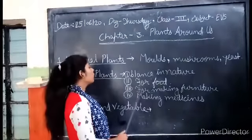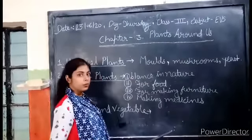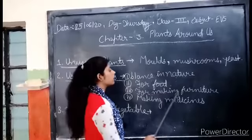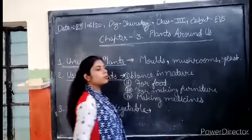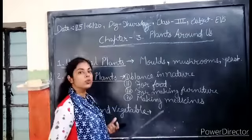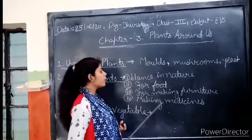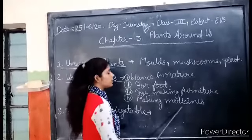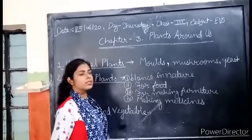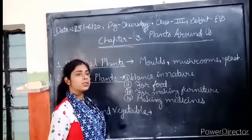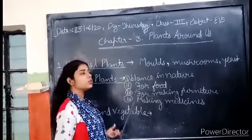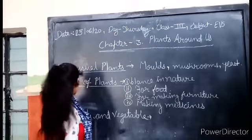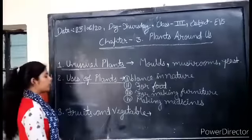For food — correct food. For managing furniture — plants which are good are used for furniture. For managing medicine — some of the plants, such as Ashwagandha and others, are used as medicine. Foods and vegetables.